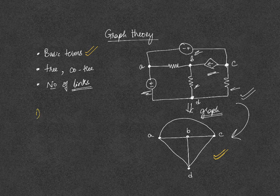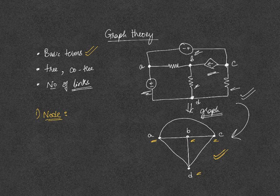The first term we are going to learn is what is meant by a node. A node is any point at which two or more elements have a connection. So here, what are all the nodes? A, B, C, and D. So you have four nodes in this graph.